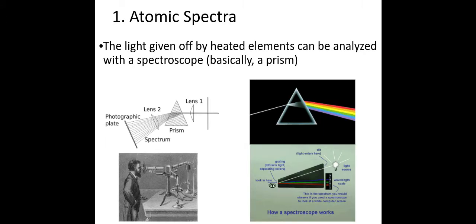Two separate observations are important to understanding how we got to the quantum model of the atom using Bohr's information. The first is atomic spectra. If you have a substance — here's a candle burning with its atoms getting excited — excited atoms will give off light. If you pass white light through a prism, the prism will spread the light out and we can see all the different components. So people were studying the different light given off by various substances.